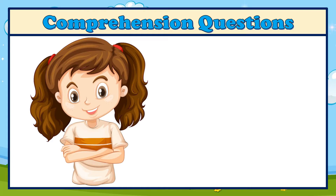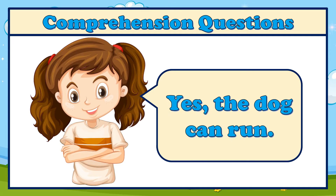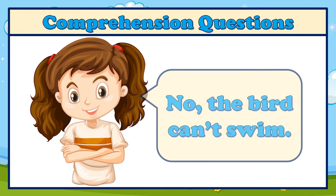Now let's answer the comprehension questions. Can the dog run? That's right — yes, the dog can run. Can the bird swim? You are correct — no, the bird can't swim.